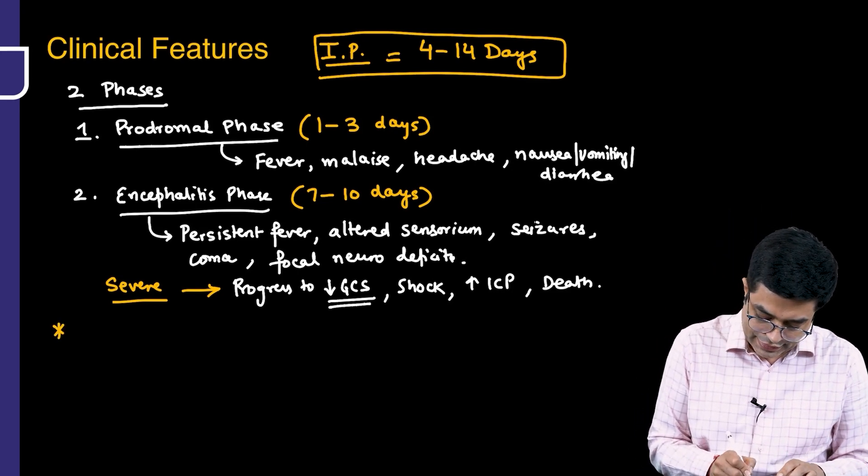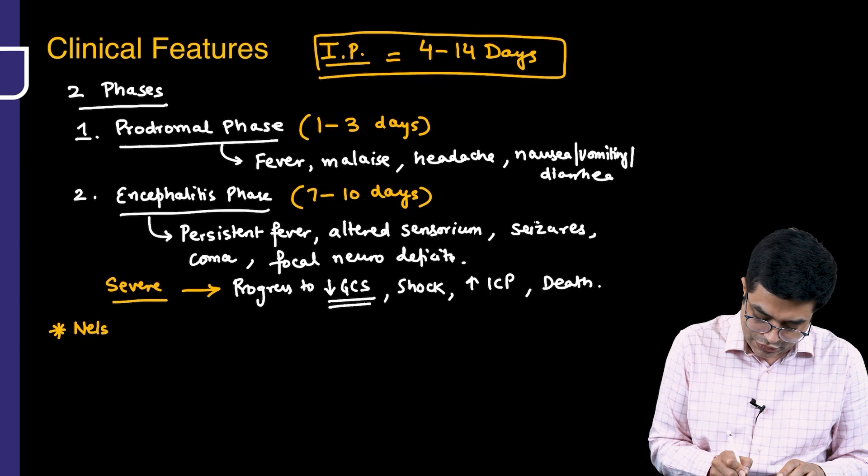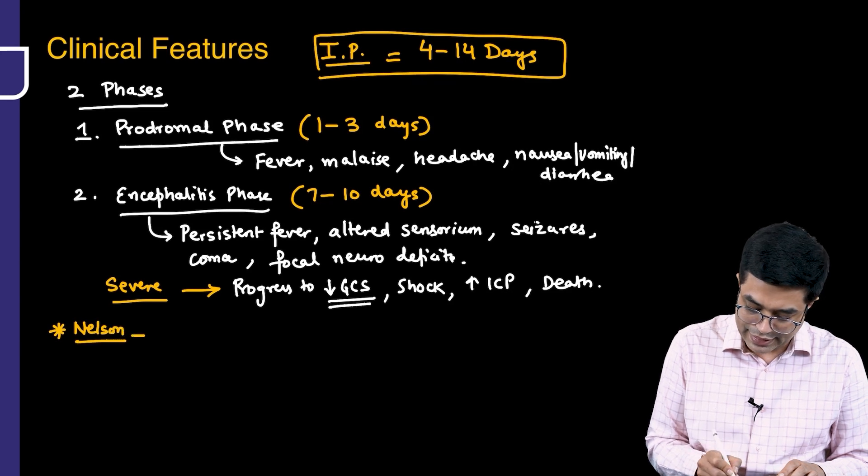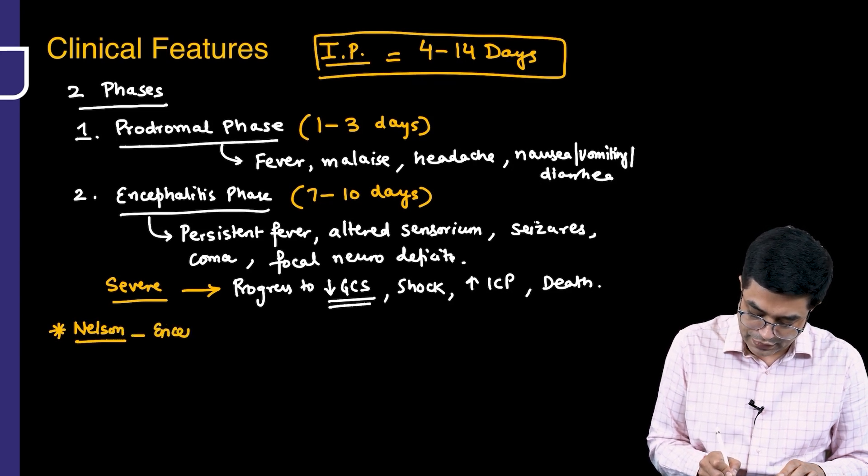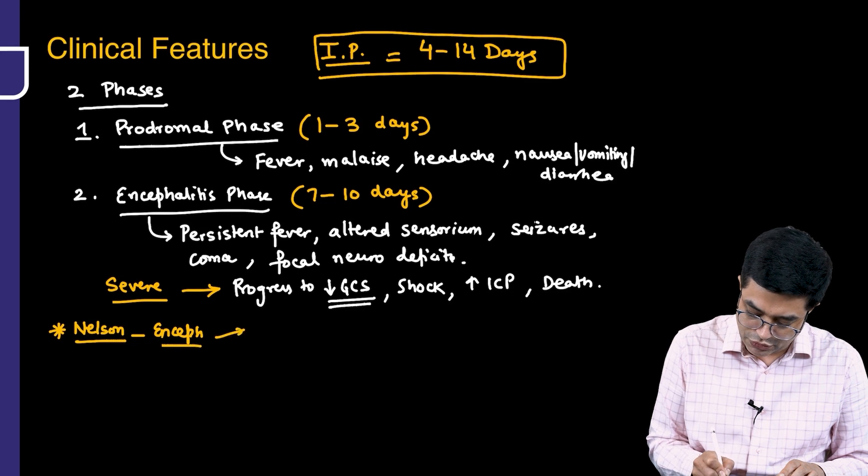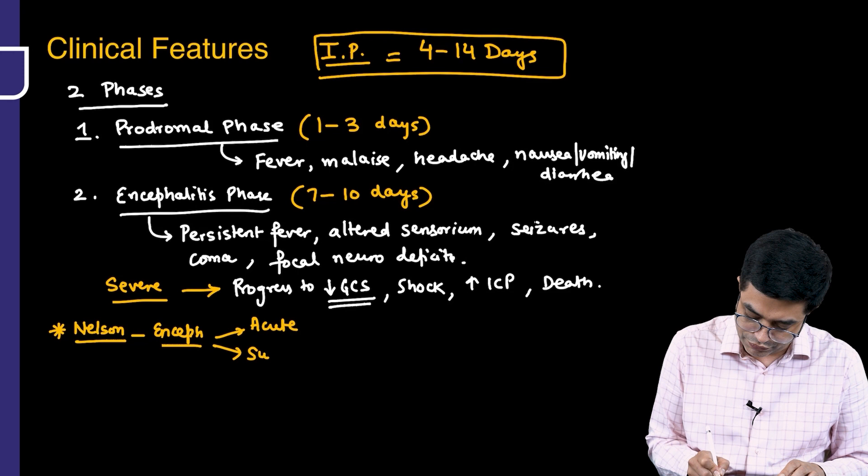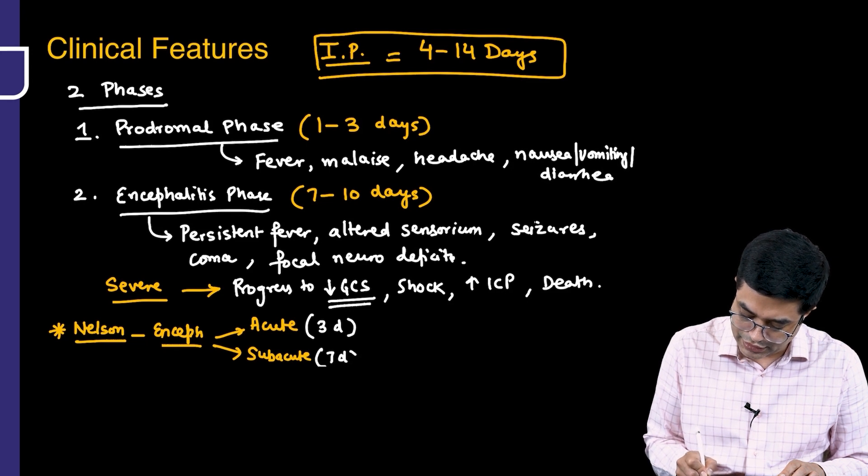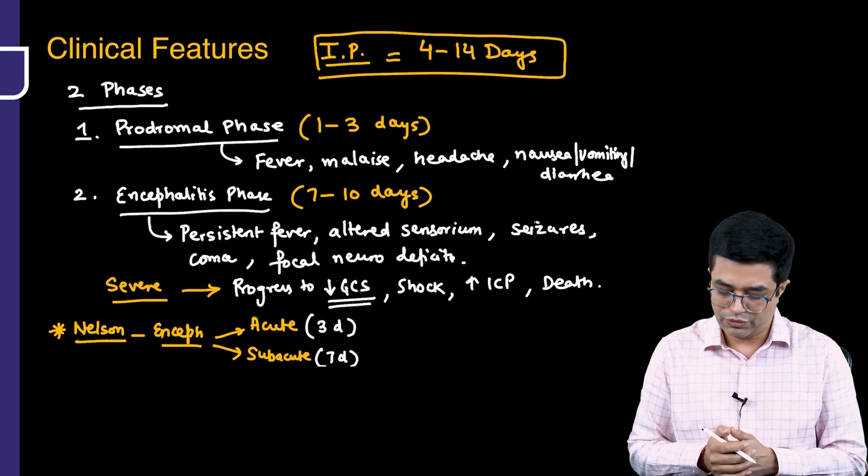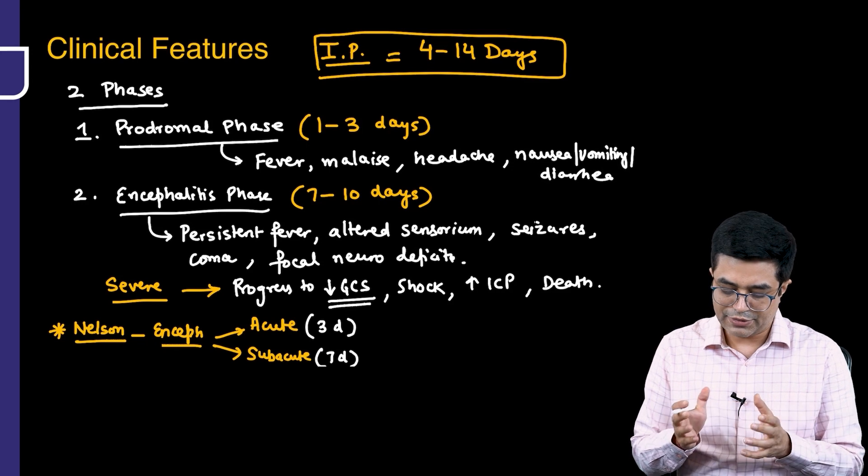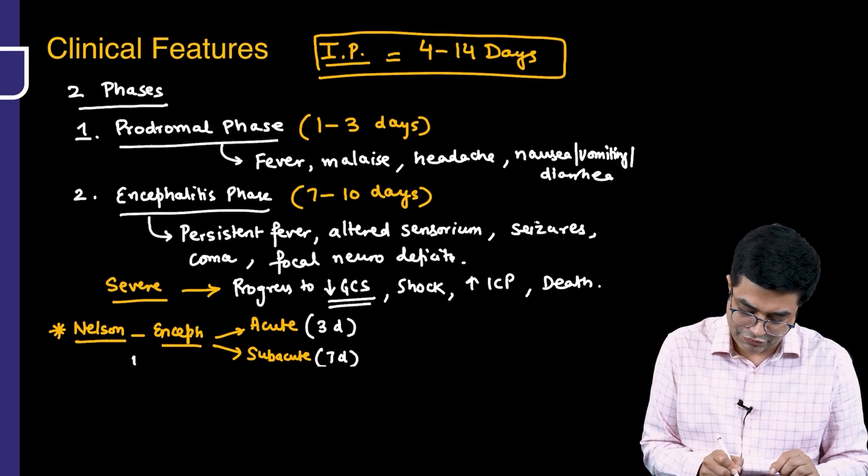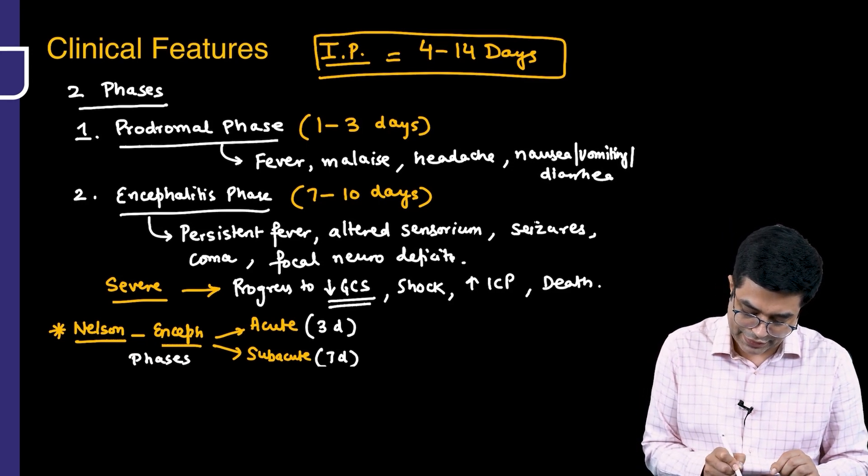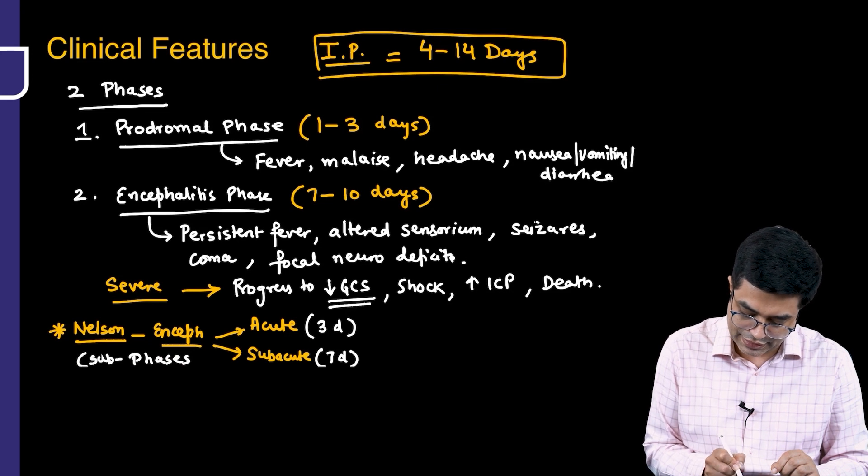According to Nelson 21st edition, the encephalitis phase can be subdivided into two phases known as acute phase and subacute phase. The acute phase lasts for about three days and the subacute phase lasts for about seven to ten days. These sub-phases have been described in Nelson.